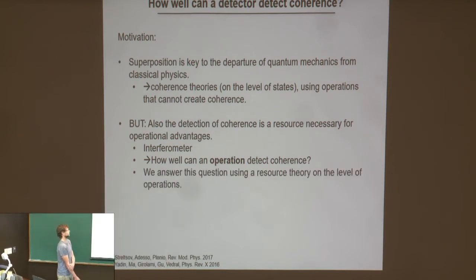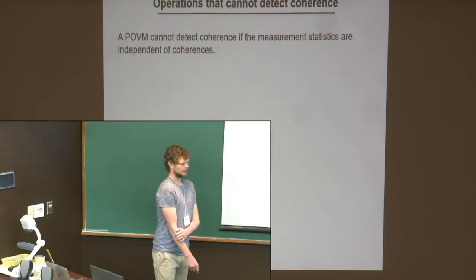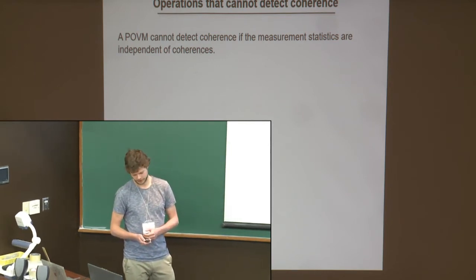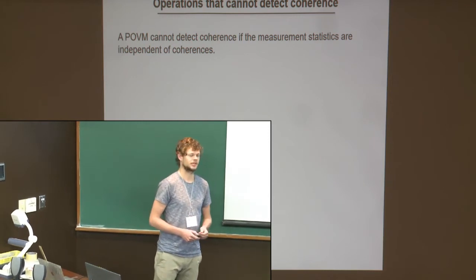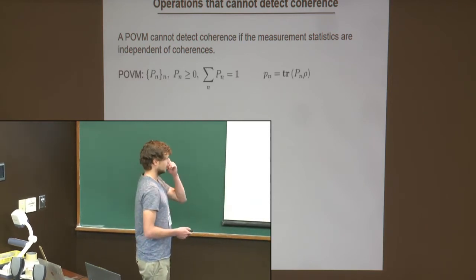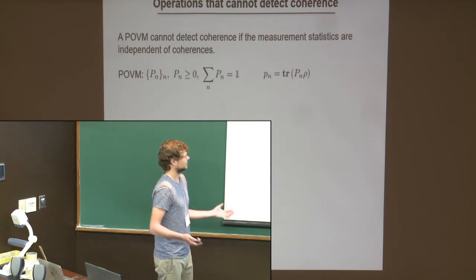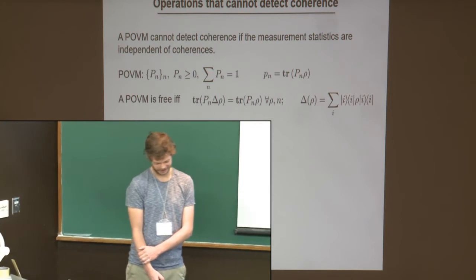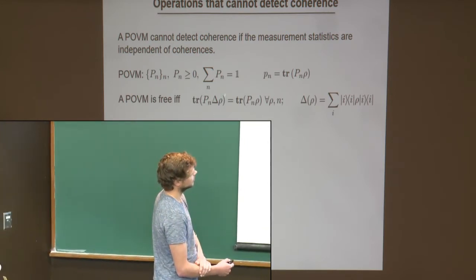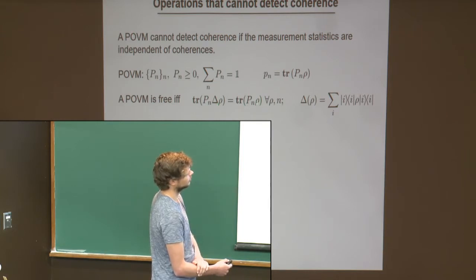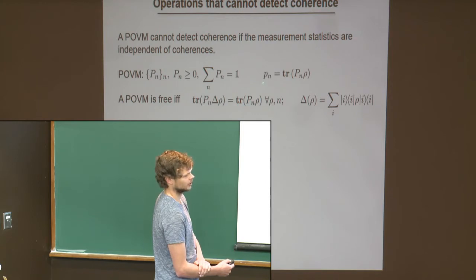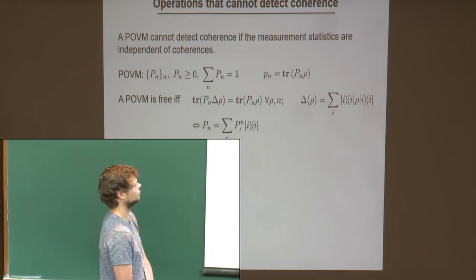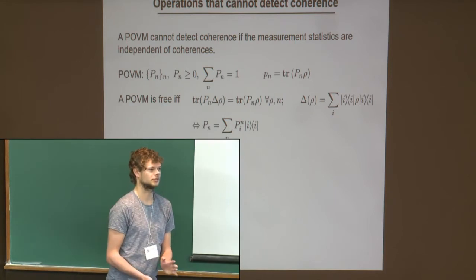To address this question we build a resource theory on the level of operations. First we have to figure out when an operation cannot detect coherence — we have to find the set of free operations. Since we are interested in measurement statistics, we start with POVMs. A POVM given by elements P_N is naturally not able to detect coherence if coherences don't show up in the measurement statistics: mathematically, whether we first delete all coherences using a totally dephasing map or whether we don't leads to the same probability to obtain outcome M. One can show directly that this is equivalent to demanding that all POVM elements are diagonal in the incoherent basis, so they are insensitive to any coherences.